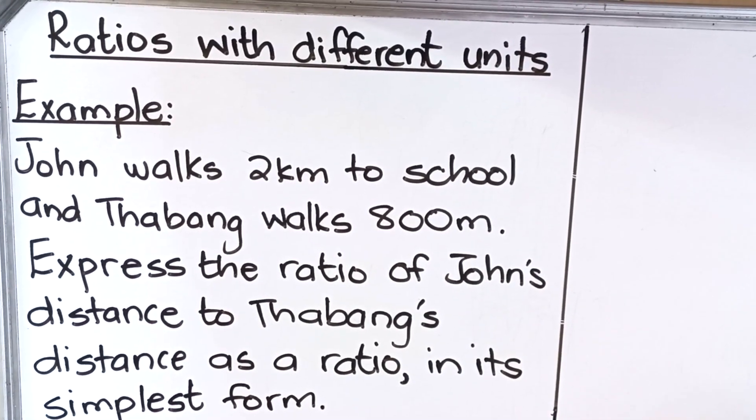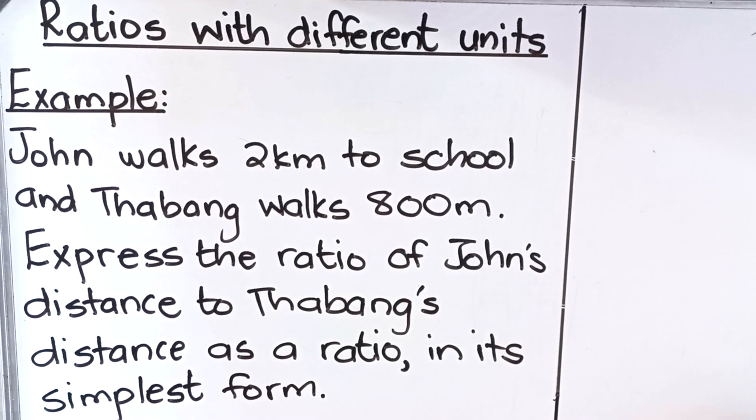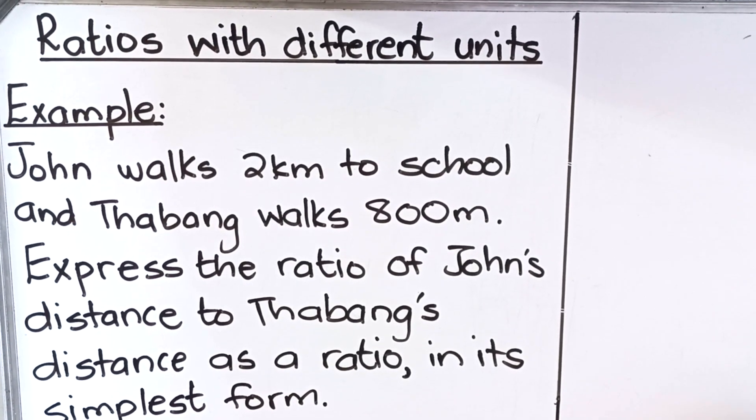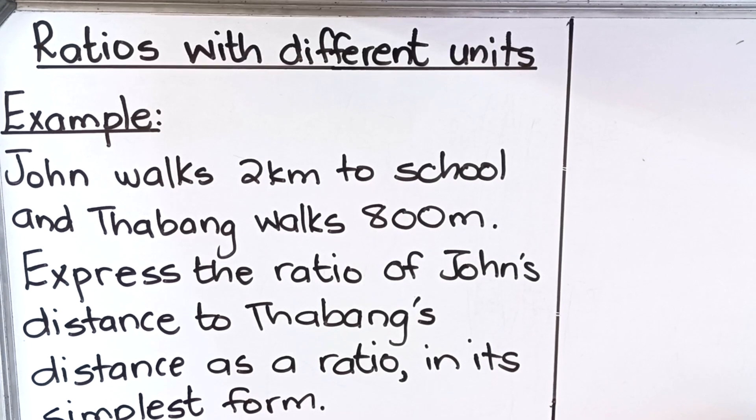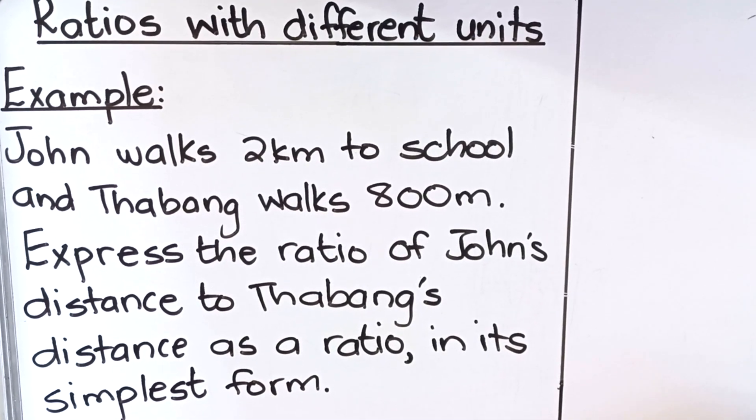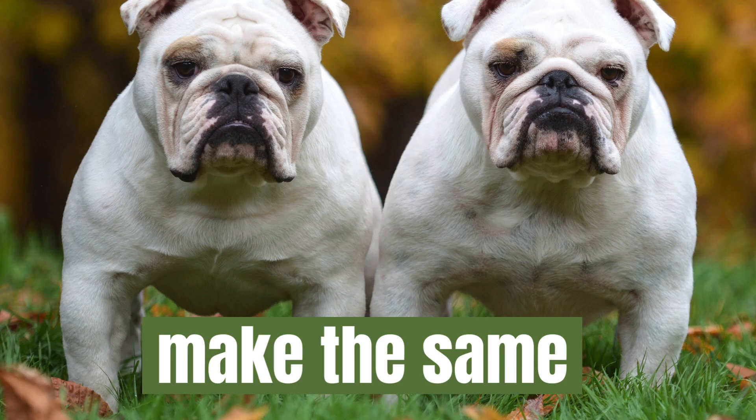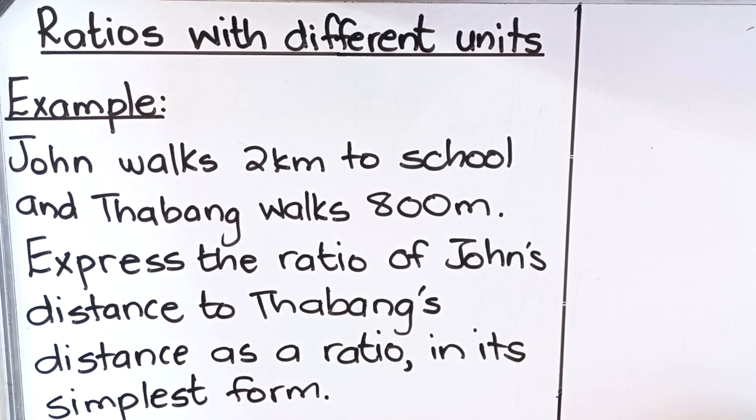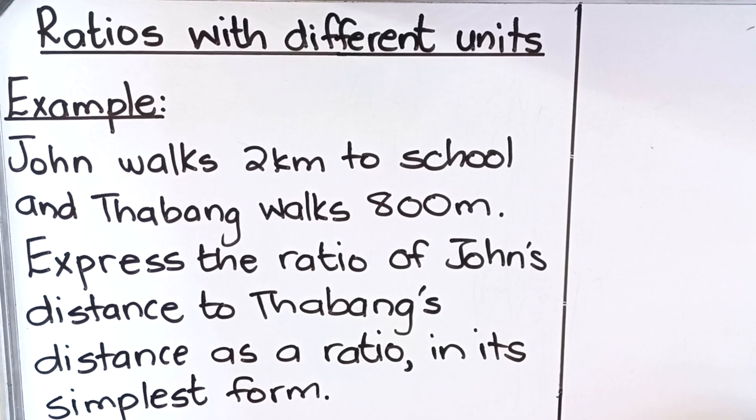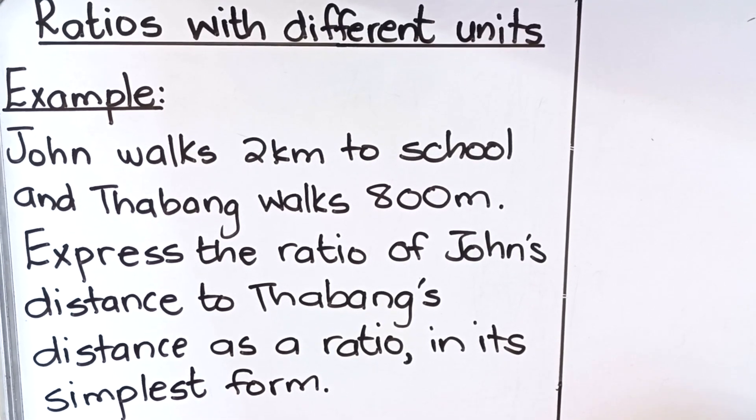Hello everyone, in this video we're going to do ratios with different units. When you have ratios that you're supposed to simplify but they have different units, you start by making them have the same units before you can simplify them. Here I have an example we want to use to explain this concept.